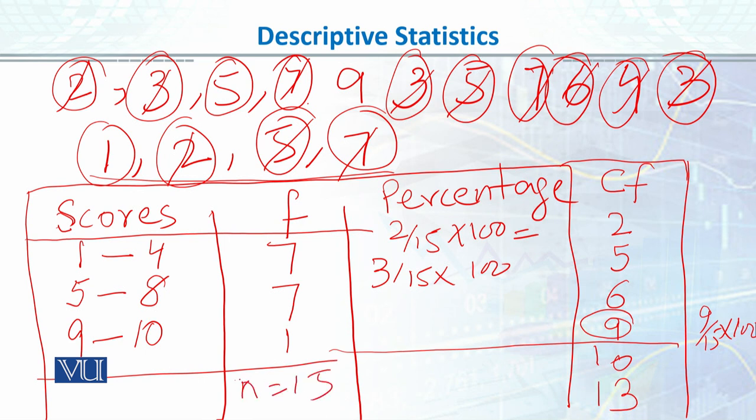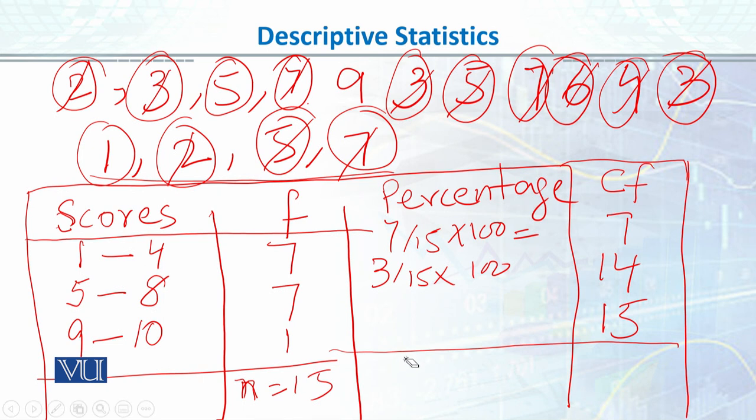And this is our total and cumulative frequency also we can do 7 by 15 out of 100 and cumulative we can do 7 plus 7, 14, and then 1, then 15 is your cumulative frequency column. So this is called grouped frequency distribution.